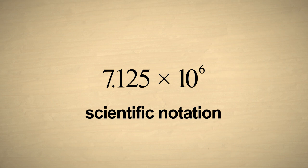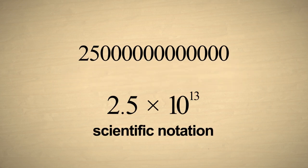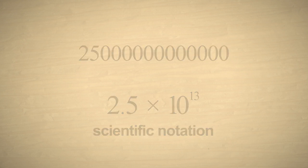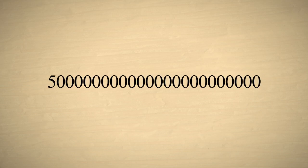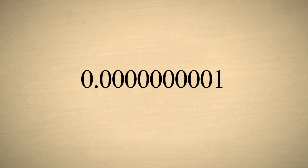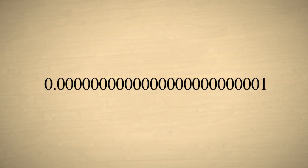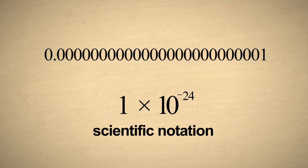For instance, the distance to the nearest star, 25 trillion miles, expressed in scientific notation is 2.5 times 10 to the thirteenth miles. And the number of atoms of gas in a toy balloon, about 500 sextillion, expressed in scientific notation is 5 times 10 to the twenty-third. Very small numbers are also much easier to express in scientific notation. For example, the size of an atom of helium, about one ten-billionth of a meter, expressed in scientific notation is 1 times 10 to the negative ten meters. And one yoctosecond is 1 times 10 to the negative twenty-four seconds.